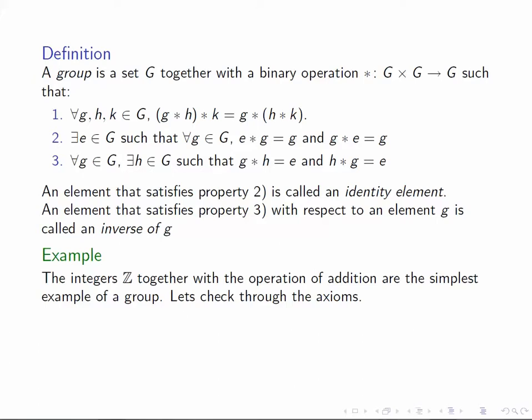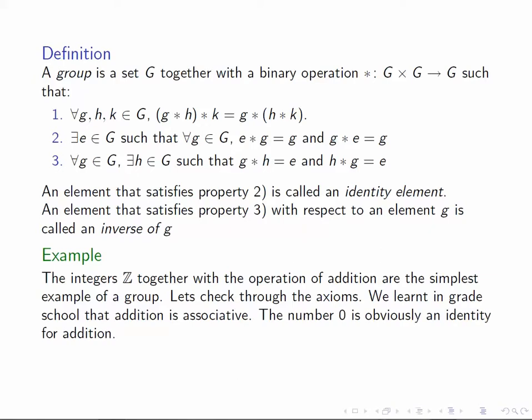The simplest example of a group is the set of integers together with the operation of addition. We can easily check through the axioms. We know that addition is associative for the integers, this is something we learn in grade school. Obviously, the number 0 is an identity for addition and the inverse of a number n is minus n.